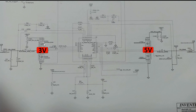As you can see, once the two MOSFETs receive the control signal, the 19 volt becomes 3 volt here and 5 volt here. So the question is: how does 19 volt become 3 volt, and how does it become 5 volt? Please answer in the comment section below — I want your answers.